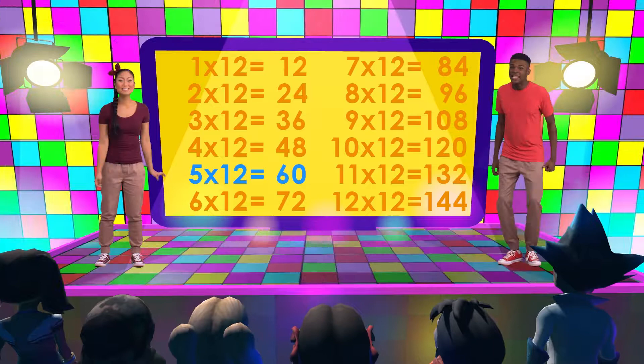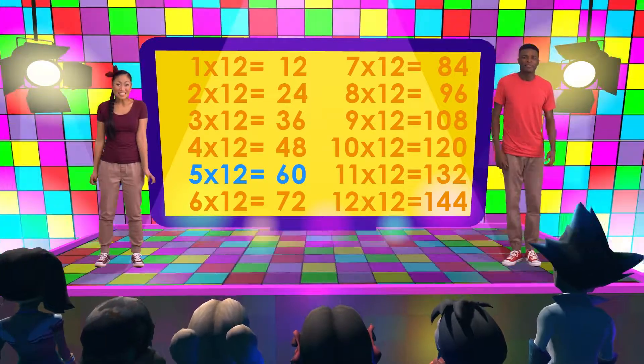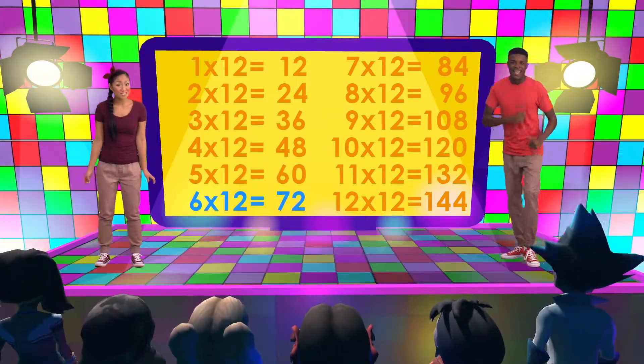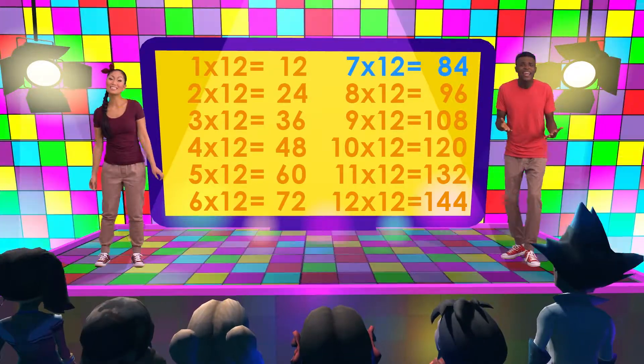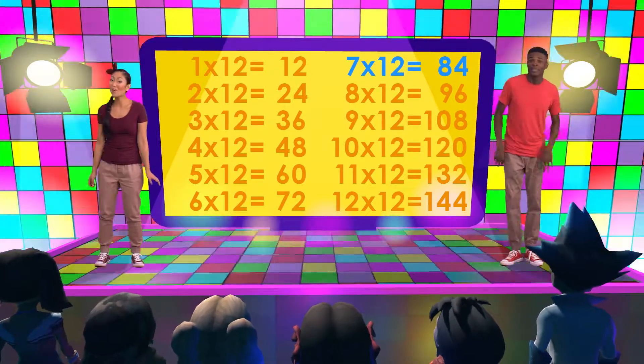5 times 12 is 60. 6 times 12 is 72. 7 times 12 is 84.